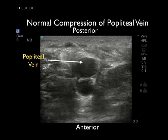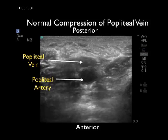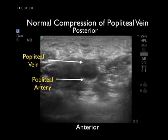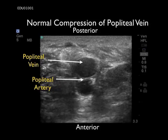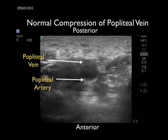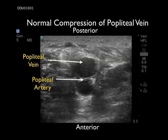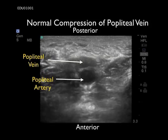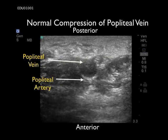Continuing downwards, we'll look at the popliteal vein. Remember that the probe is placed posteriorly into the popliteal fossa for this exam. Gentle probe pressure is applied. We can see that the artery is anterior to the vein, and that the vein, which is posteriorly located, completely compresses. This would be a normal examination — the walls completely come together with probe pressure.